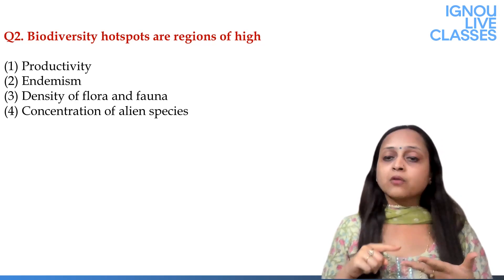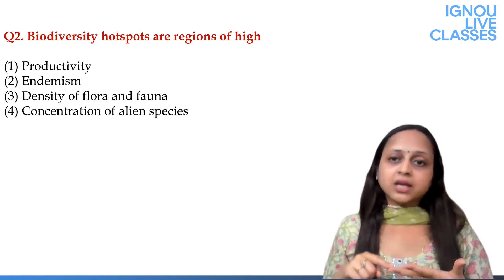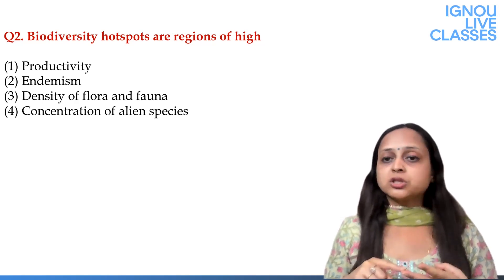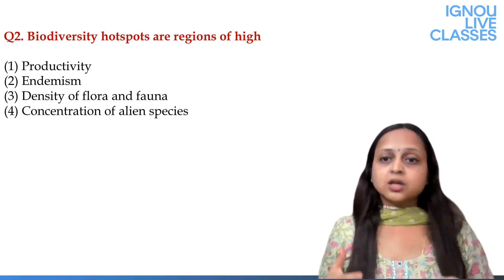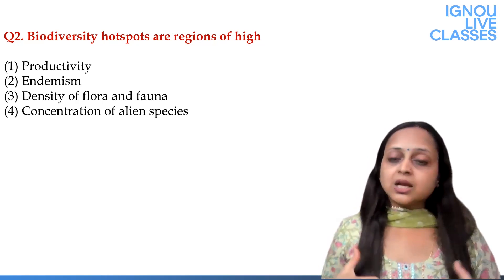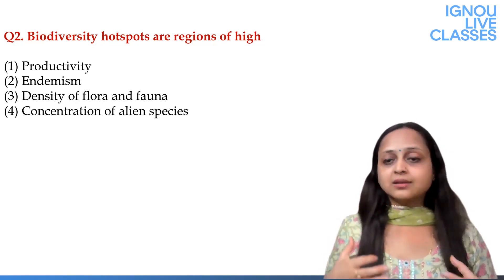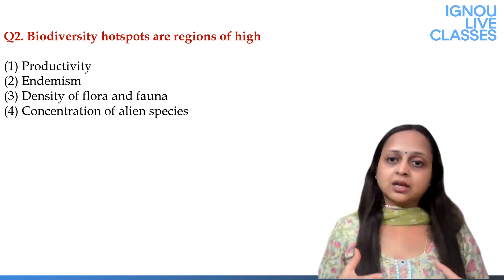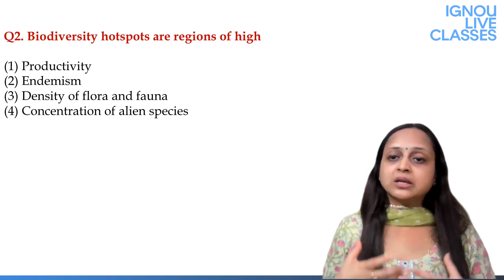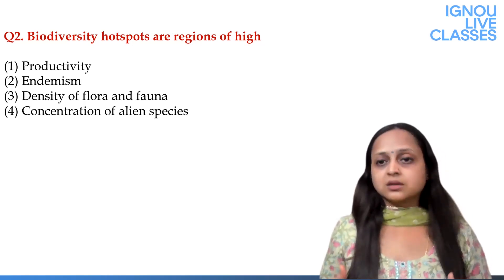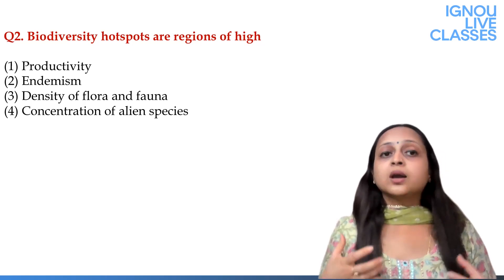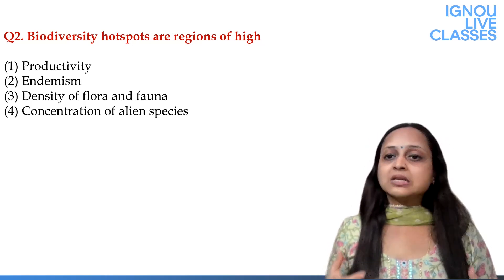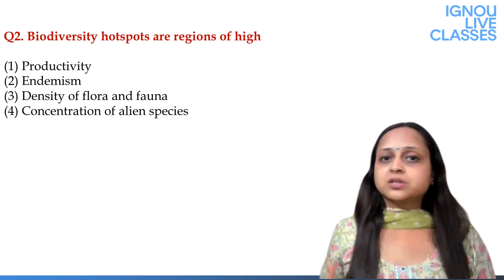Endemic means those species are found only in that area and don't occur anywhere else. Third, the species are under threat — they are endangered. So if an area meets these three criteria, we declare it a hotspot of biodiversity. Looking at the options, endemism is the key property of biodiversity hotspots.